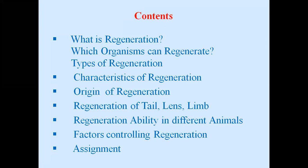इस chapter के अंदर हमें क्या-क्या पढ़ना है — contents की बात करें तो: What is Regeneration? Which organisms can regenerate? Types of regeneration, characteristics of regeneration, origin of regeneration, regeneration of tail, lens and limb, regeneration ability in different animals (protozoa, annelida, arthropoda), factors controlling regeneration, और last में assignment. यह सारे topics हम इस chapter के अंदर cover करेंगे।